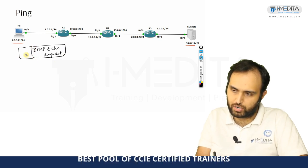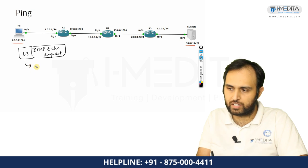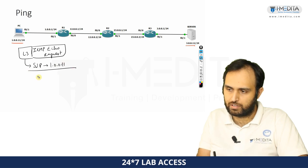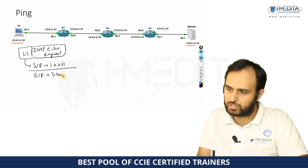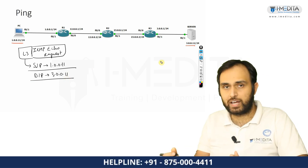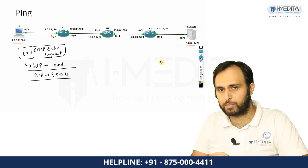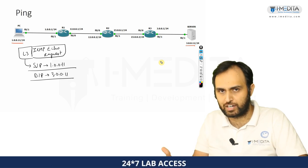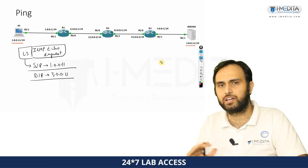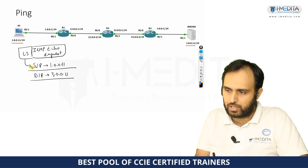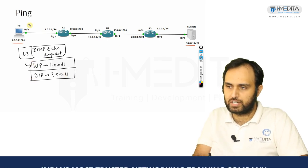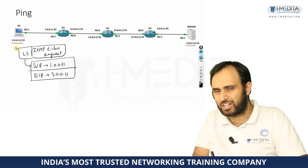Then it will put a Layer 3 header on it. In the Layer 3 header, the source IP is 1.0.0.11 and the destination IP will be 3.0.0.11. We are assuming here that R1, R2, and R3 know about all the different networks — we might utilize a routing protocol or static routing, but that is for another video.